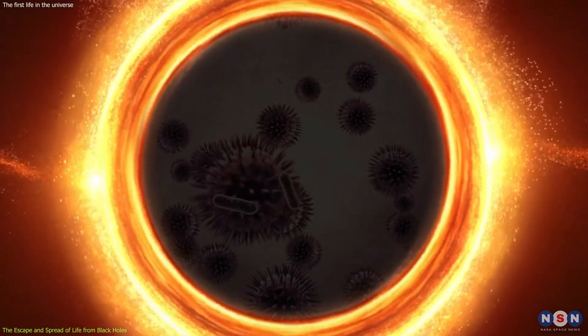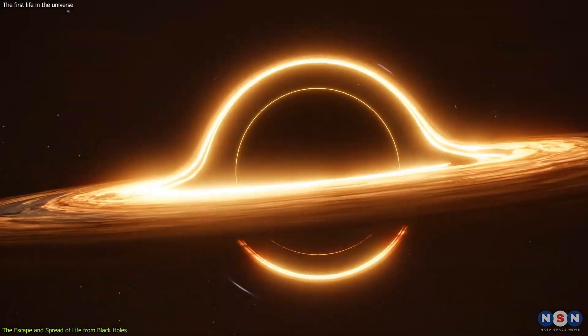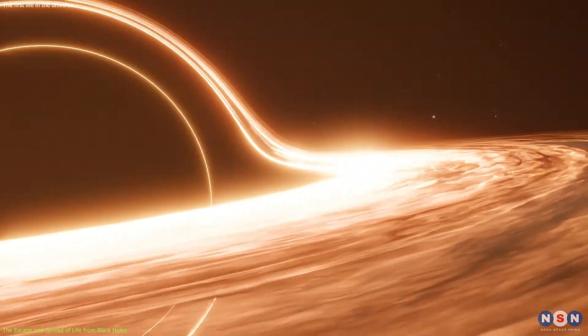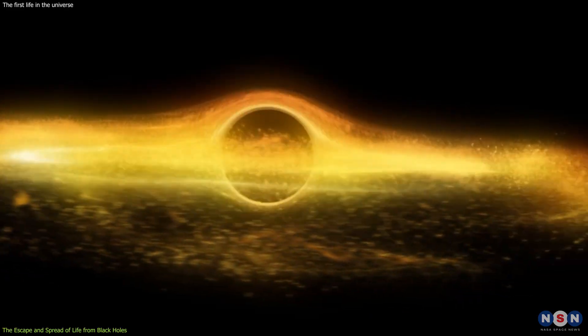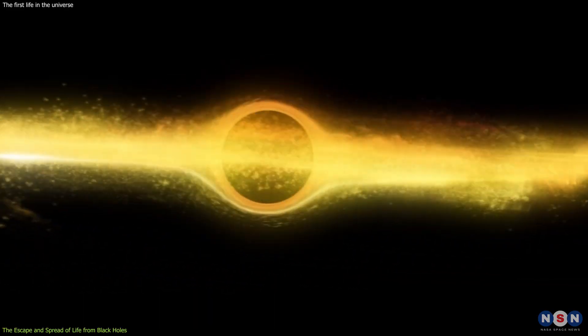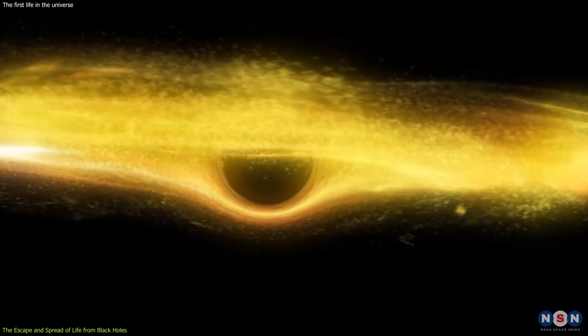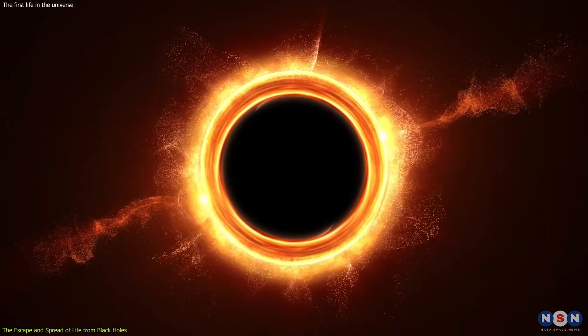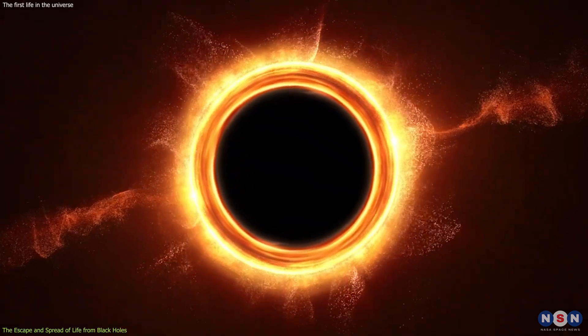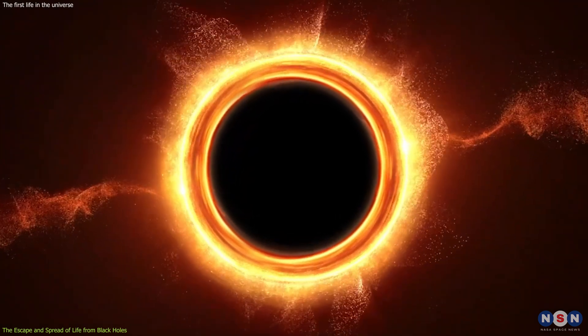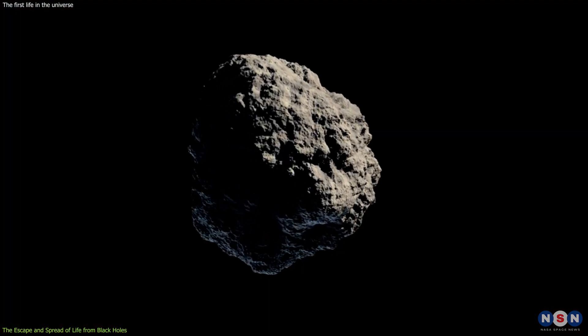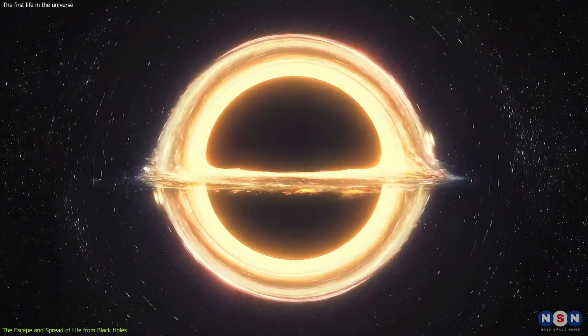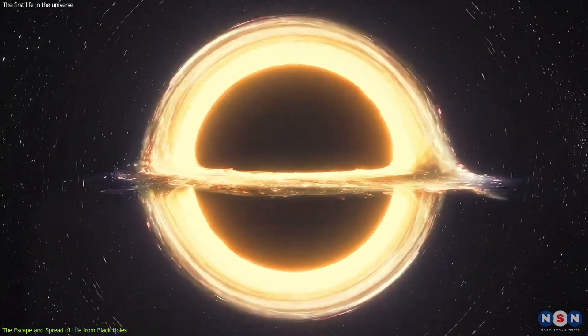The researchers of the new study proposed that Hawking radiation could also carry some of the life forms that live inside the black hole to the outside world. They calculated that the optimal size and spin of the black hole for life to escape would be about 10 to the power of 11 kilograms and 0.99, respectively. This means that the black hole would have a mass of about 100 billion kilograms, or about the mass of a small asteroid, and a spin of about 99% of the maximum possible value.